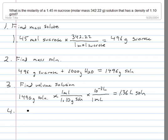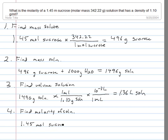For the final part of this problem, we're going to find the molarity of the solution. Molarity is moles over liters. We know that we had 1.45 moles of sucrose — that's what we started with in part one — and we know that that was in 1.36 liters of solution, which we found in part three.